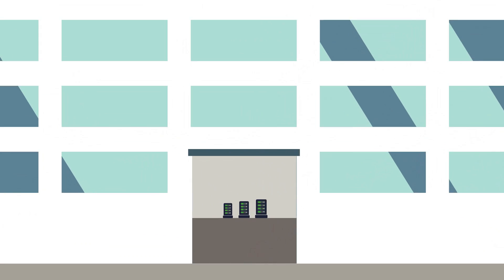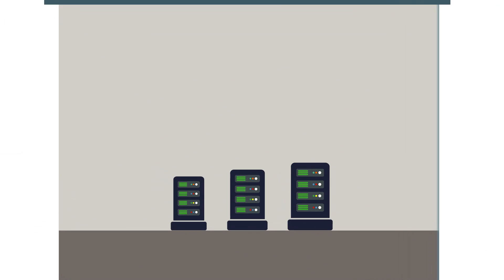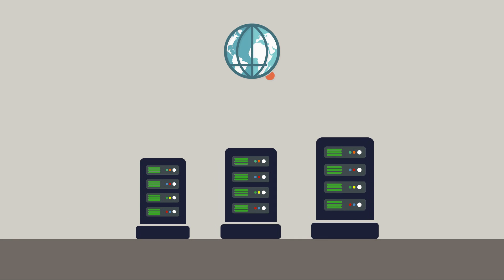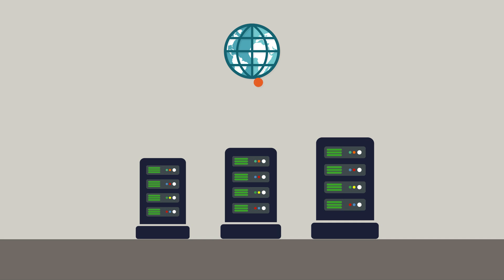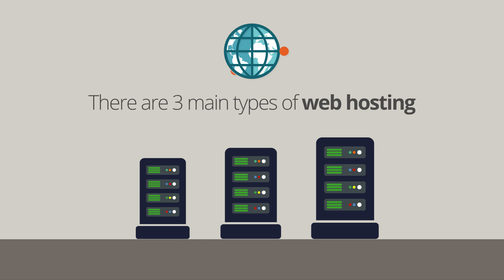When you rent space on a server from a company like EZSpace, then this is what we call web hosting. There are three main types of web hosting that you can choose from: one, shared hosting; two, virtual servers; and three, dedicated servers.